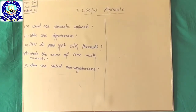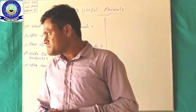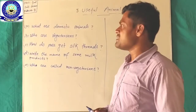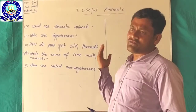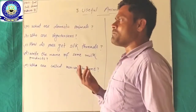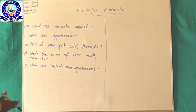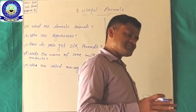Examples of wild animals: lion, tiger, predator, giraffe, elephant, deer, monkey. Examples of domestic animals: cow, buffalo, goat, ox, horse, and so on. And examples of pet animals: dog, cat, parrot, rabbit, etc.